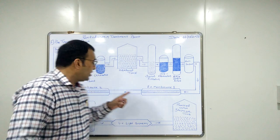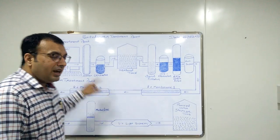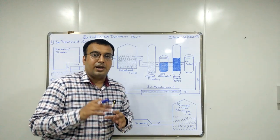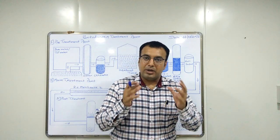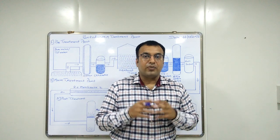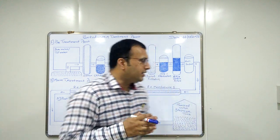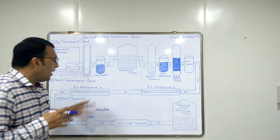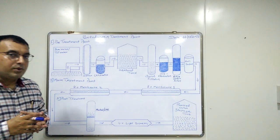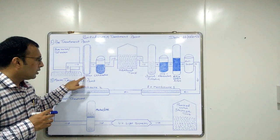How to regenerate the softener? Concentrated salt solutions called brine solutions are used to regenerate the softener. So the main function of the softener is to make soft water from hard water.